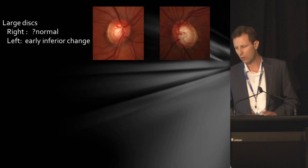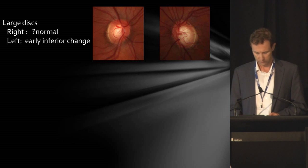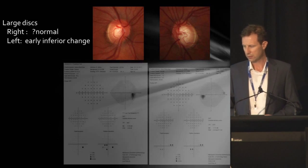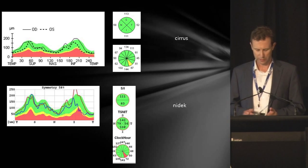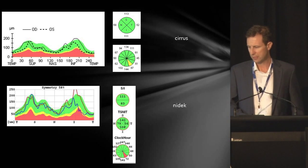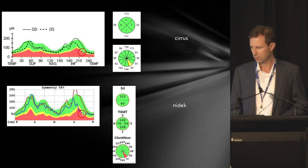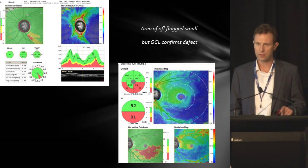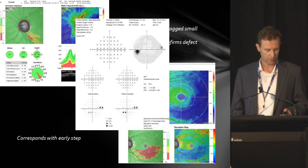This next patient has large discs. The right looks possibly normal or a bit suspicious; the left has early inferior change. Field test is still basically normal in both eyes. Imaging the nerve fibre layer on the Cirrus and the NIDEC, there's a small borderline area on the left side in both. But when we do the ganglion cell imaging, there's a much larger defect on the left side, and this actually corresponds with this early nasal step as well.